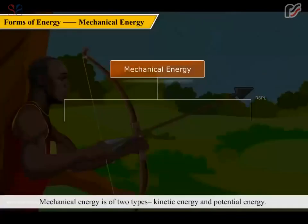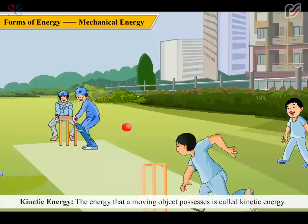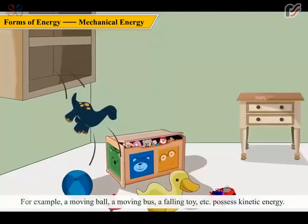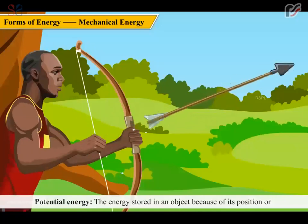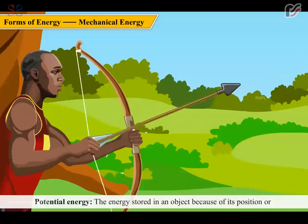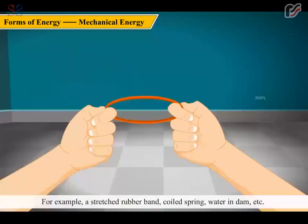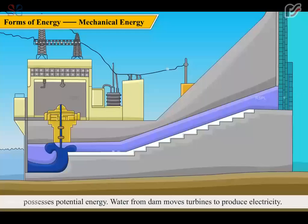Mechanical energy is of two types: kinetic energy and potential energy. Kinetic energy is the energy that a moving object possesses. For example, a moving ball, a moving bus, a falling toy, etc. possess kinetic energy. Potential energy is the energy stored in an object because of its position or configuration. For example, a stretched rubber band, a spring, water in a dam, etc. possess potential energy. Water from a dam moves turbines to produce electricity.